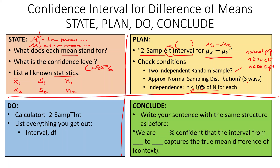For independence, both n1 and n2 need to be less than 10% of the population they're taken from. On the calculator, we're doing a two-sample t interval — two samples because we have two samples, t because we're working with means, and interval because we're finding an interval. Make sure to list the interval and degrees of freedom. Write the conclusion sentence: 'We are [blank] percent confident that the interval from [blank] to [blank] captures the true mean difference of [whatever],' with units.